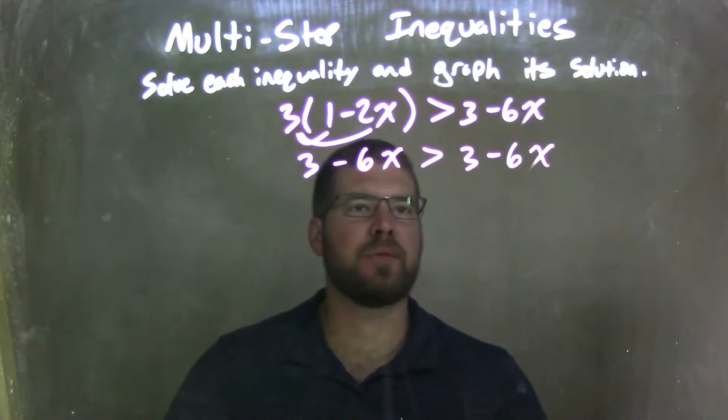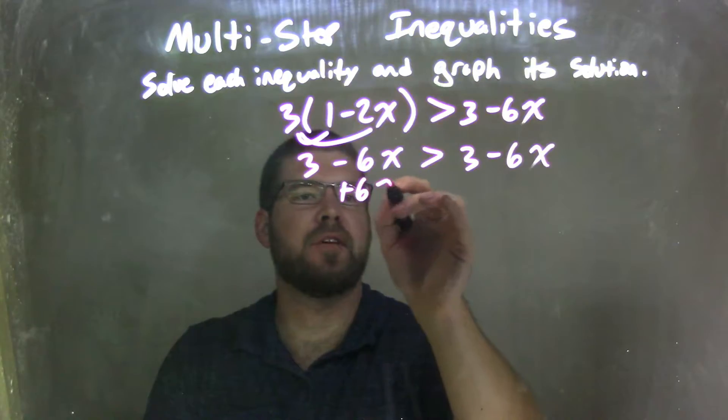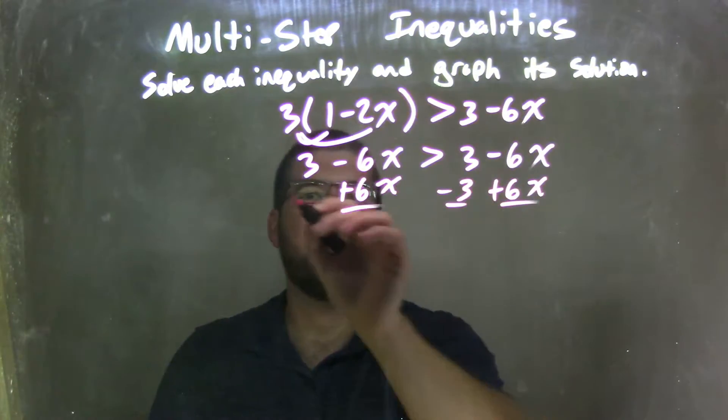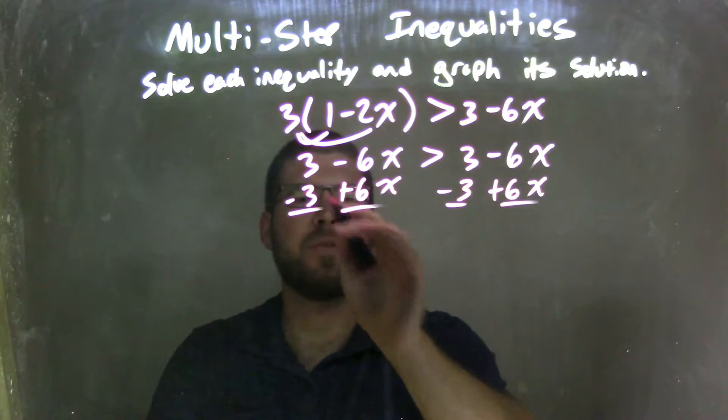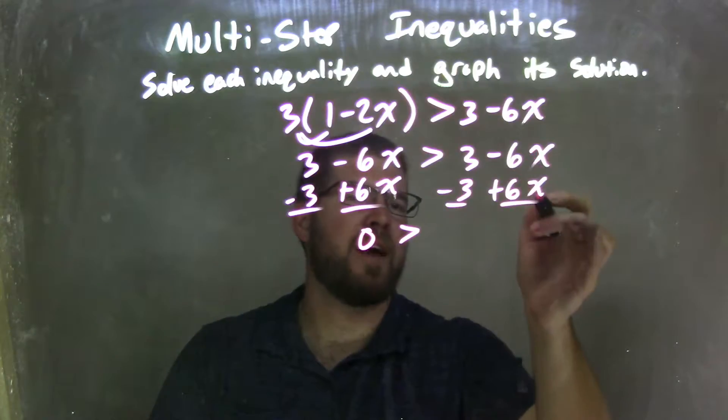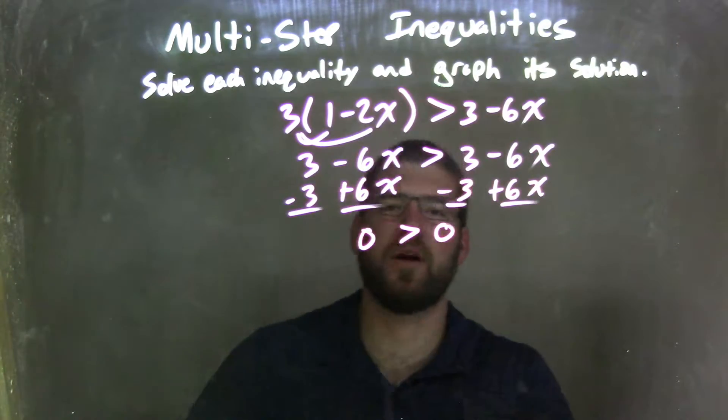So let's combine our like terms. Let's bring our x's over to the right, plus 6x to both sides. And I'm going to subtract a 3 to both sides. Leave me, well, 3 minus 3 is 0, right? And these cancel. It's greater than negative 6x plus 6x is also 0.